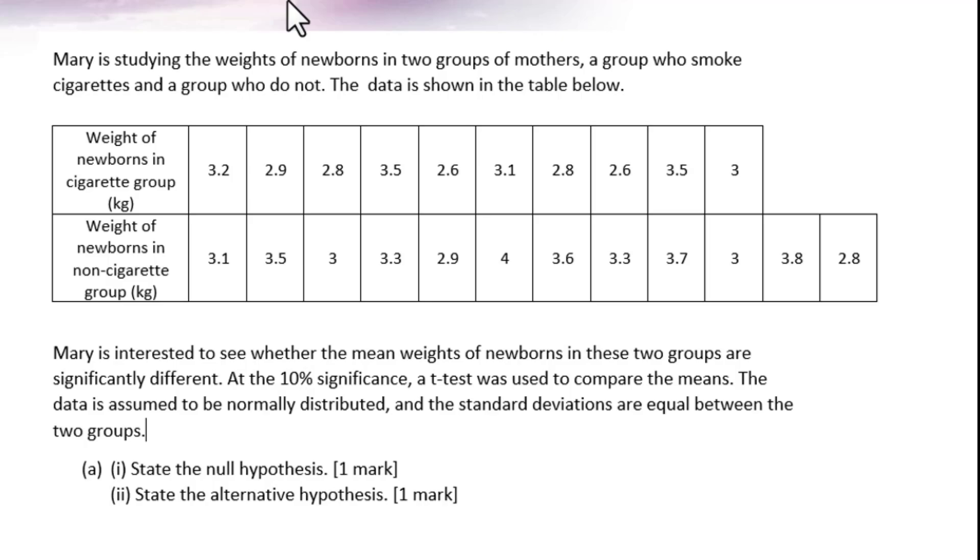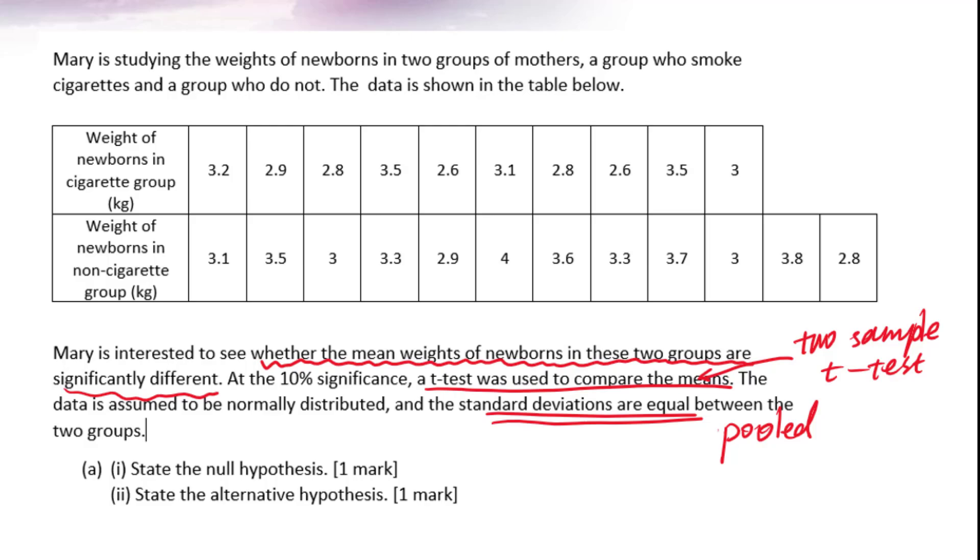Mary is interested to see whether the mean weights of newborns in two groups are significantly different. At the 10% significance, a t-test was used to compare the means. This information means we will use two sample t-tests. The data is assumed to be normally distributed, and the standard deviations are equal between the two groups. The standard deviations are equal means we will use pooled standard deviation.